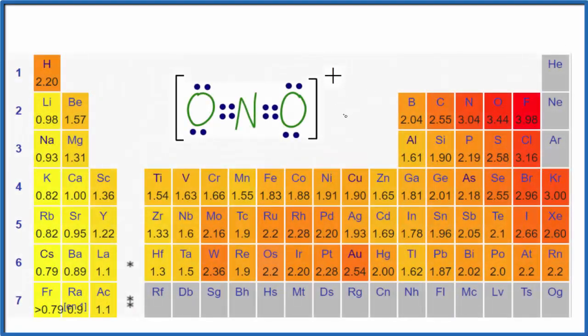The question is whether NO2 plus is a polar or nonpolar ion, and the short answer: it's nonpolar. Let's talk about why. Let's look at the Lewis structure and then we'll talk about what this positive charge means. Here's our Lewis structure. If you need help writing the Lewis structure for NO2 plus, there's a link in the description to help you do that.